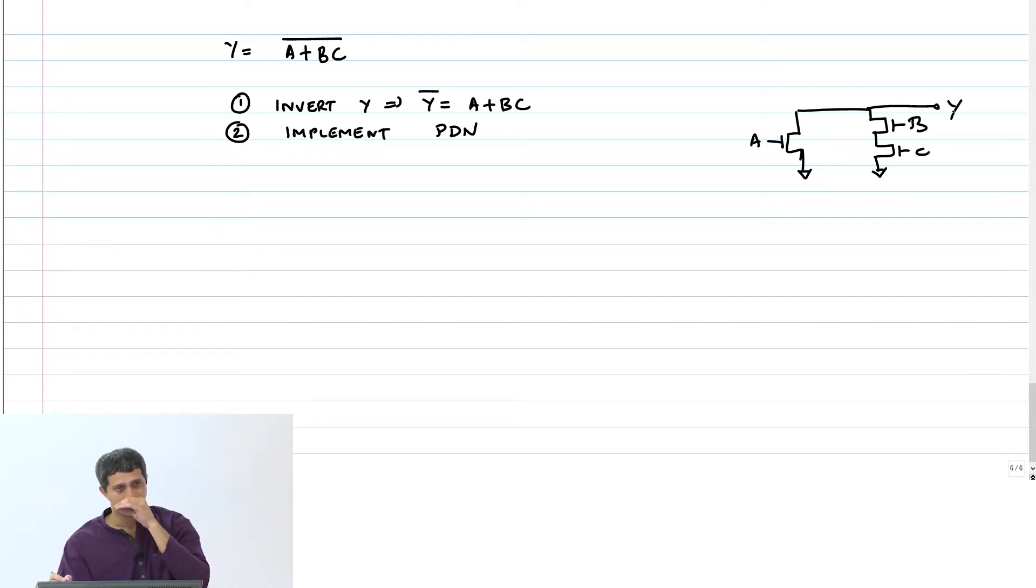Now to get the pull-up network, just construct the dual of this network. Make every series parallel, every parallel series. So I have B and C in series.